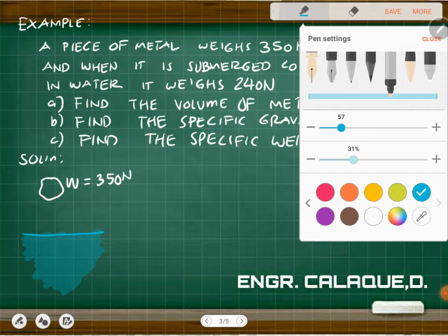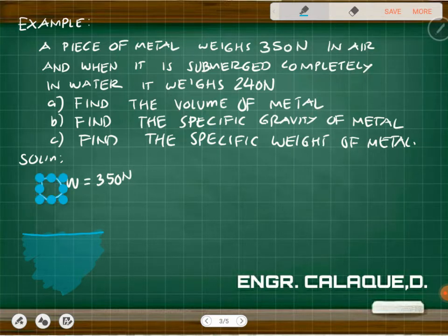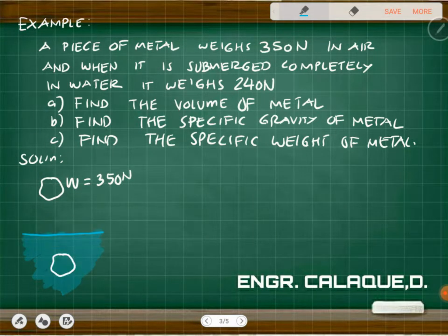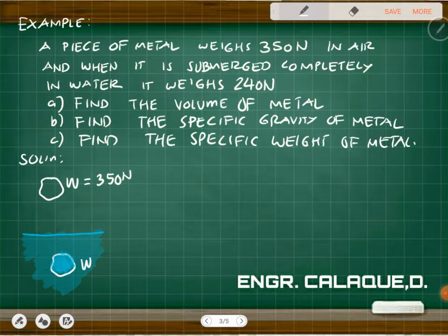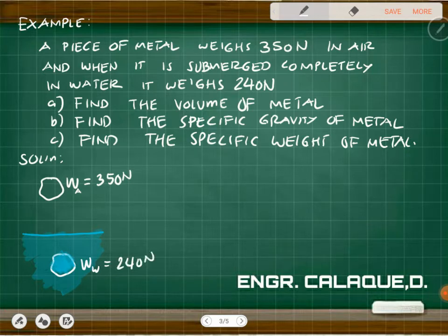When the material is placed in water it displaces fluid and the weight decreases — it's fully submerged, so we consider the total volume. Now the weight in water is 240 newtons. The weight changed and lessened because of the buoyant force.